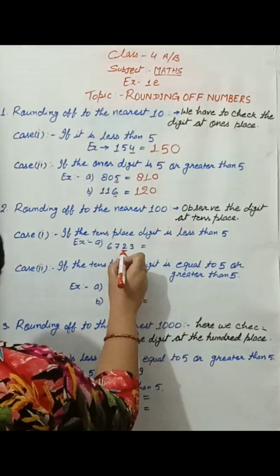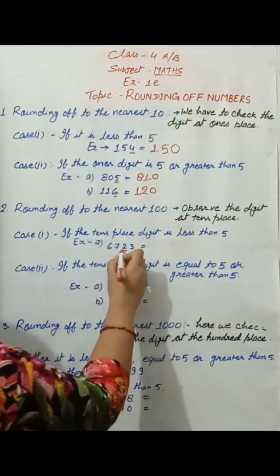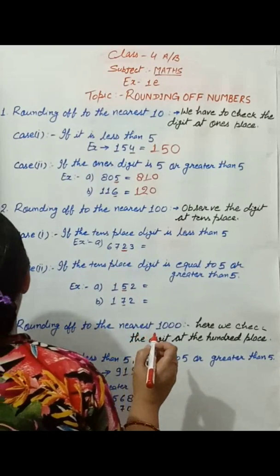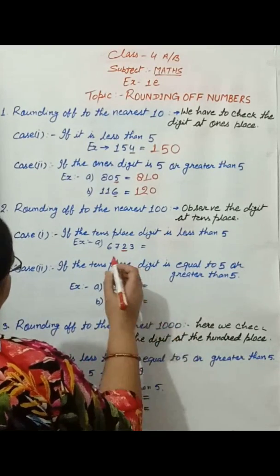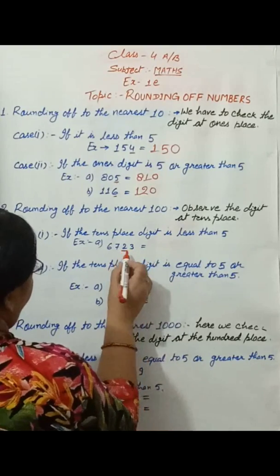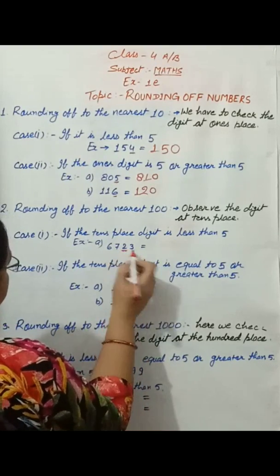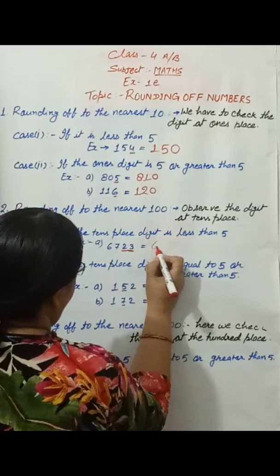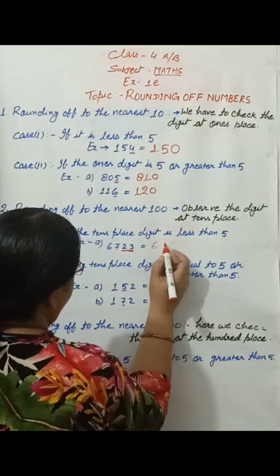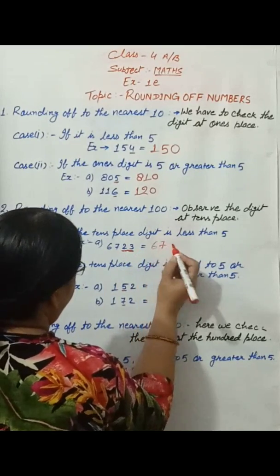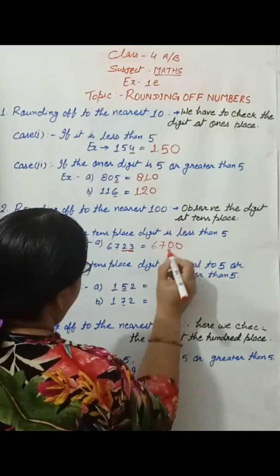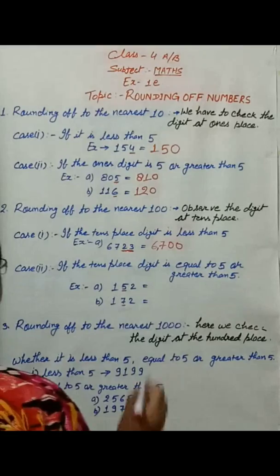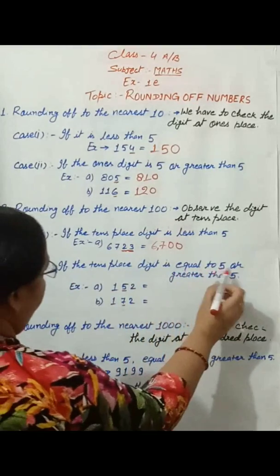If the tens place digit is less than five, then replace the tens and ones place digits by zero and retain the other digits as they are. For example, this gives six thousand seven hundred — written as six seven zero zero.